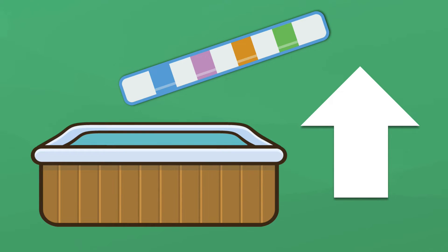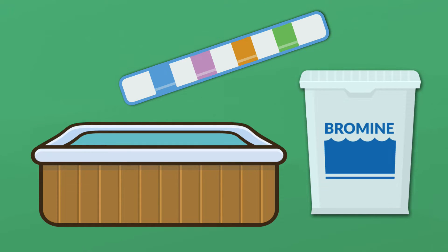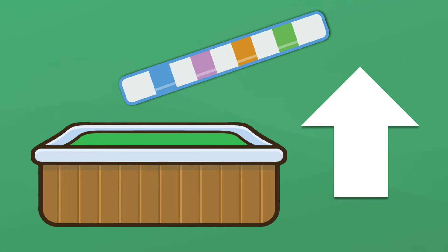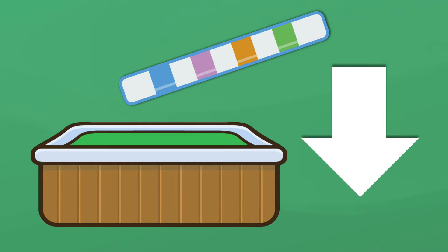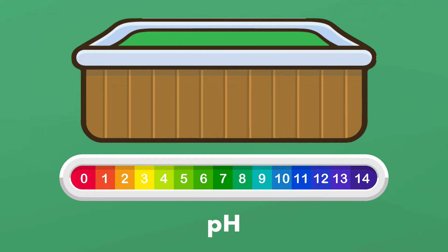If the alkalinity in your hot tub is too high, it can reduce your sanitizer's effectiveness and cause green water. But why is your alkalinity high in the first place? How do you lower it? To fix your alkalinity levels, you actually need to manage your pH levels.